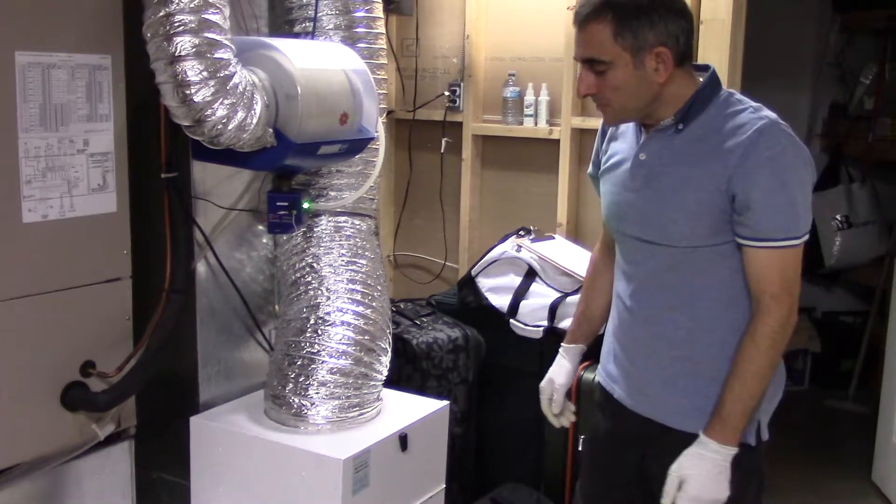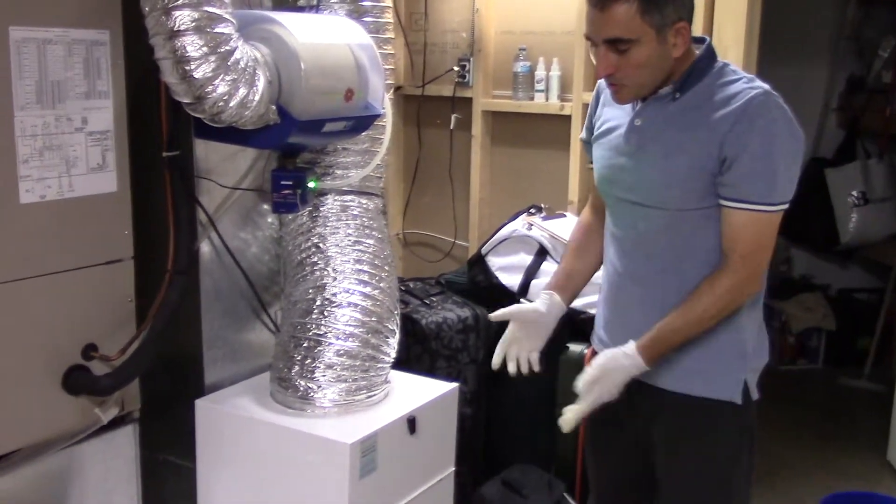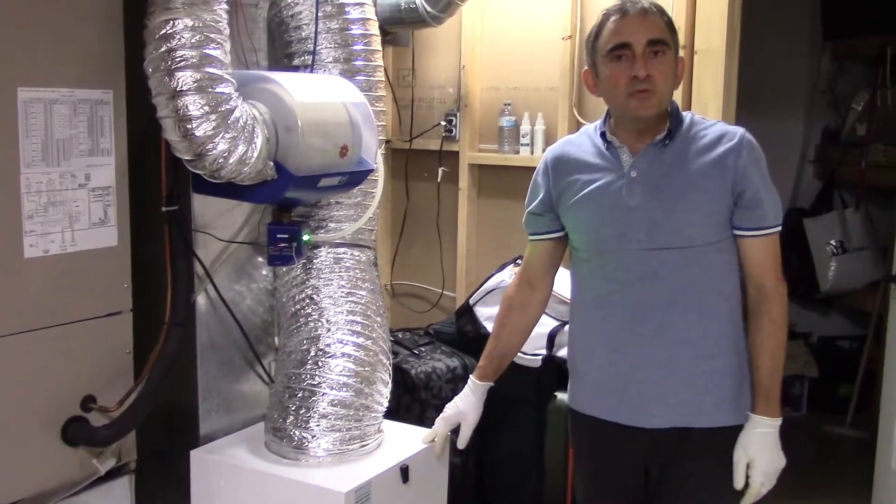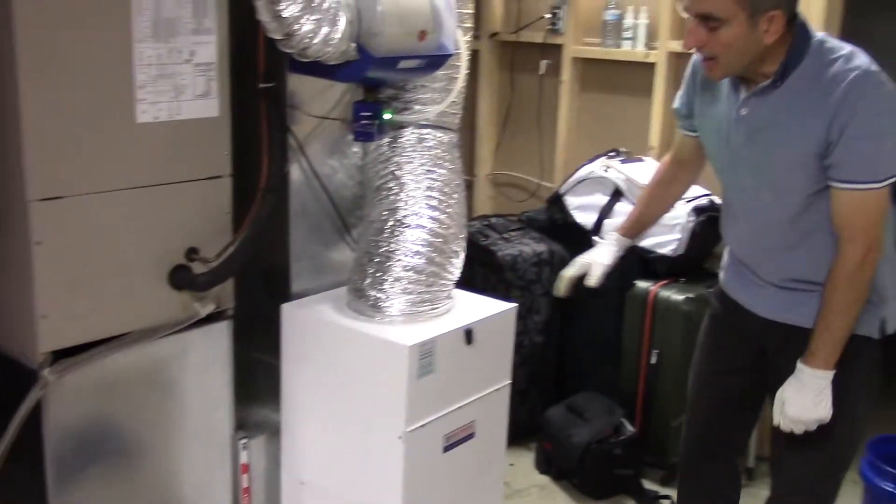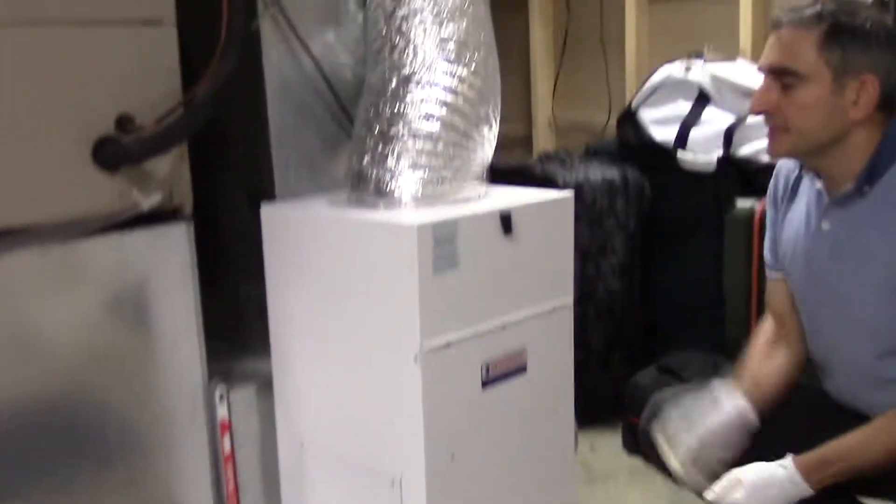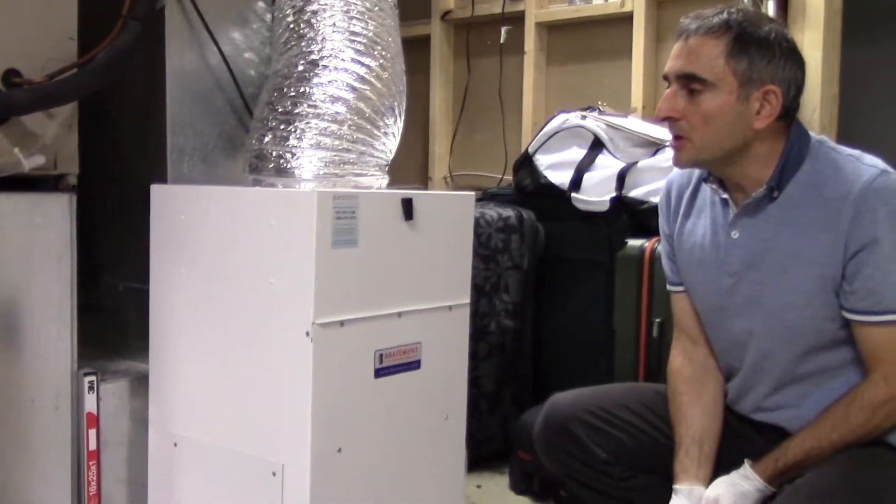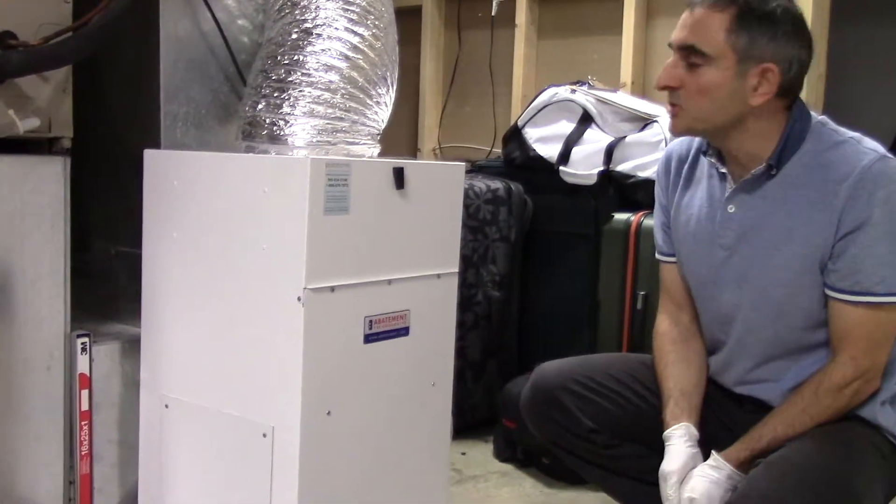Welcome to another Pure Home How We Do It video. Today we're going to change a couple of pre-filters on a home abatement air purifier. Our customer in this case has the larger abatement air cleaner. This is called the CAP 1200.